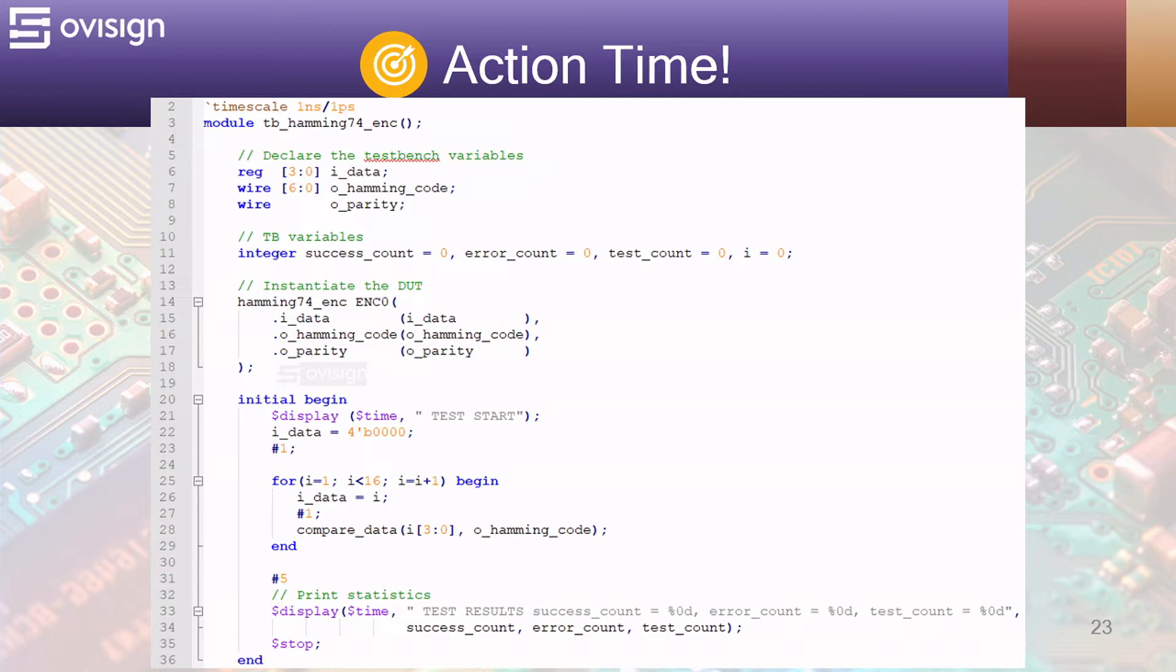The for loop from line 25 will sweep all the IDATA values from 1 to 15, wait 1 nanosecond and evaluate if the output of the encoder is correct using the compare data task. Line 33 is used to print out the test statistics and stop the simulation.